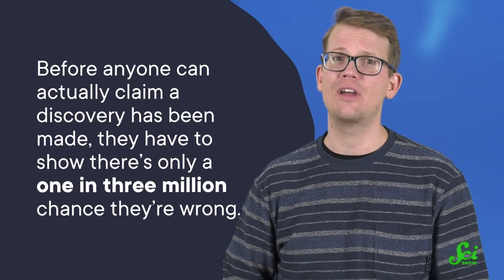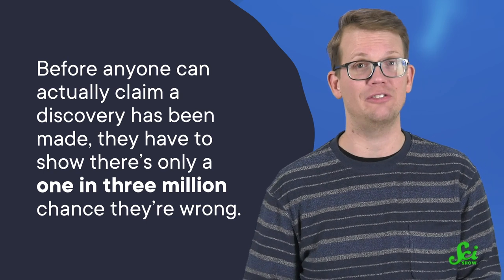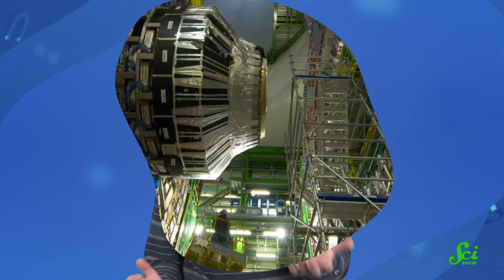But is this evidence actual proof? The team says there's only a 1 in 1,000 chance they're wrong, but in the world of particle physics, that's not good enough. Before anyone can actually claim a discovery has been made, they have to show there's only a 1 in 3 million chance they're wrong. I mean, we are talking about the fundamental rules of reality here. The standards should be pretty high.